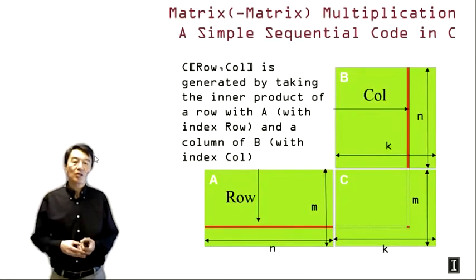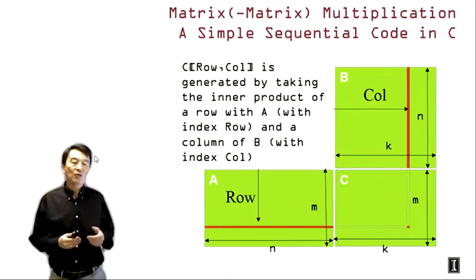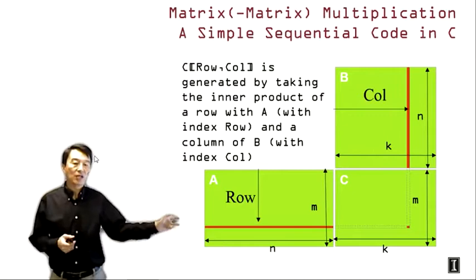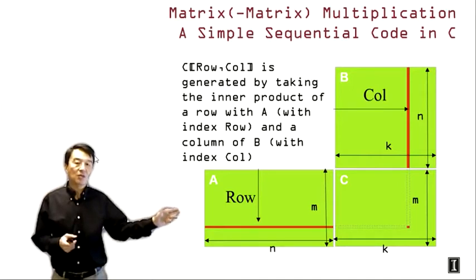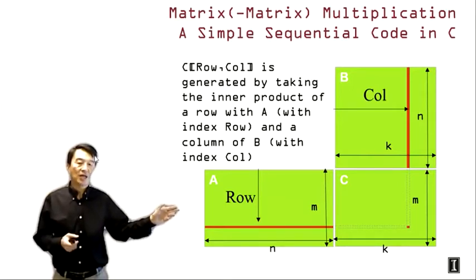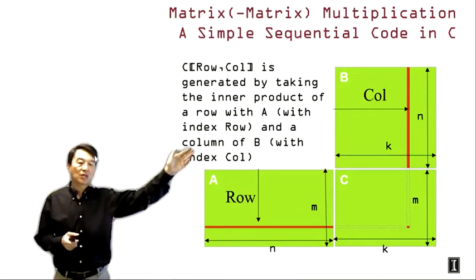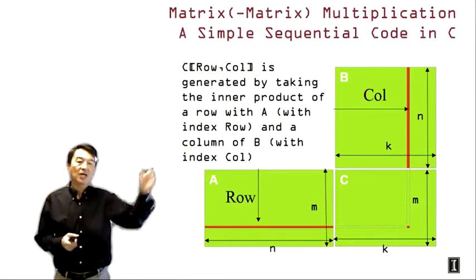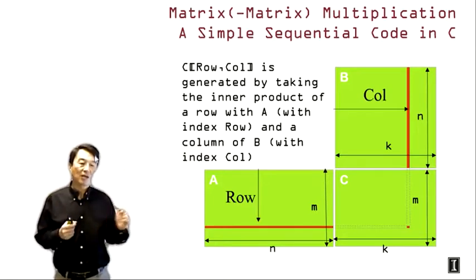Matrix multiplication is a fairly frequently used computation in engineering and science applications. We have two input matrices A and B, and we generate a product matrix C. Each C element is generated as a dot product of a row of A and a column of B. A C element has a coordinate (row, col); we use row index into A and col index into B to perform the vector dot product to generate the value of that C element.